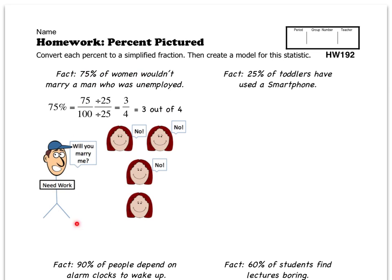They give us an example here. Let's take a look at this other one though. 25% of toddlers have used a smartphone. So we're going to do just like what they did over here.